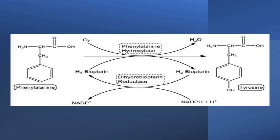To synthesize tyrosine from phenylalanine, there is an important enzyme required called phenylalanine hydroxylase. It will convert the phenyl group into a para-hydroxy phenyl group, converting phenylalanine into para-hydroxy phenylalanine. This enzyme needs an important coenzyme called tetrahydrobiopterin. During the reaction, tetrahydrobiopterin is converted into dihydrobiopterin, and for the reaction to continue, dihydrobiopterin must be converted back into tetrahydrobiopterin by an enzyme called dihydrobiopterin reductase, using the coenzyme NADPH+H⁺.